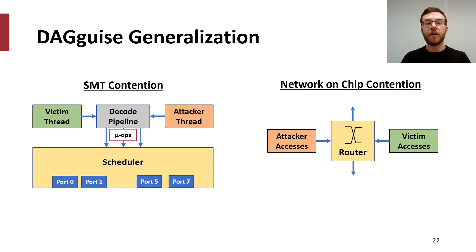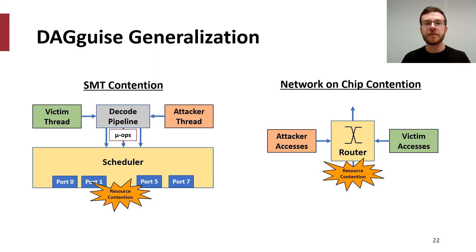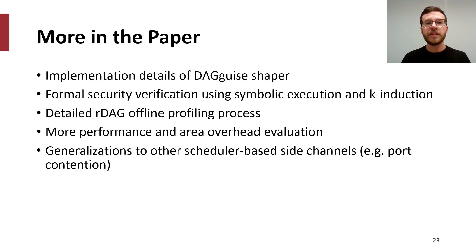We also note that both RDAGs and DAG-Eyes can be generalized to more scheduler-based side channels. For instance, both SMT cores and network-on-chip routers have schedulers which can exhibit visible contention between an attacker and a victim, resulting in leakage. The principles from DAG-Eyes can be used to shape requests corresponding to an RDAG representing either case, again allowing for dynamic contention while maintaining security. Please see our paper for more information about implementation details, formal security verification using symbolic execution and k-induction through the Rosette solver framework, the RDAG offline profiling process, more performance and area evaluations, and further generalizations to other scheduler-based side channels.